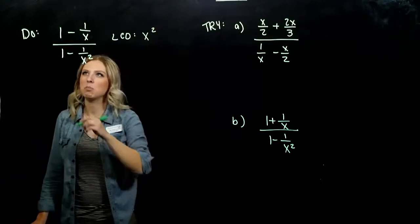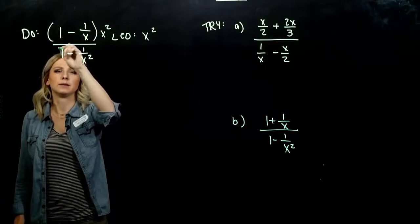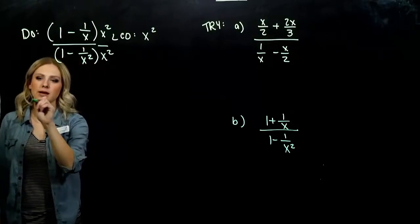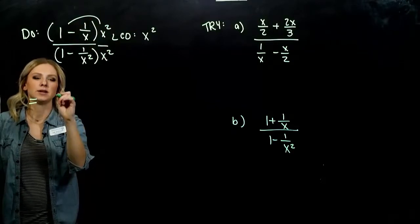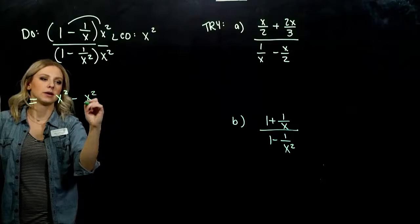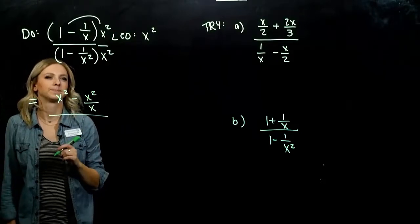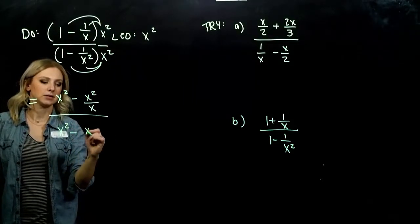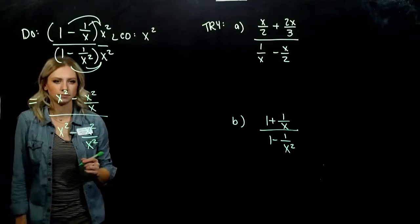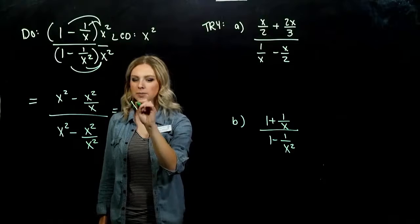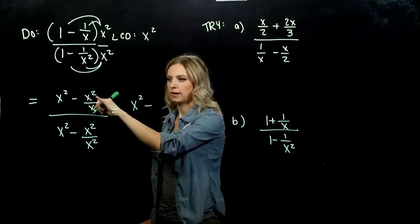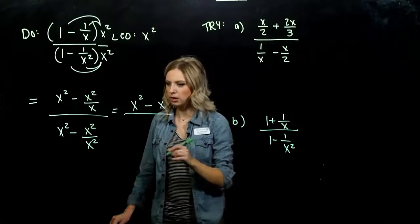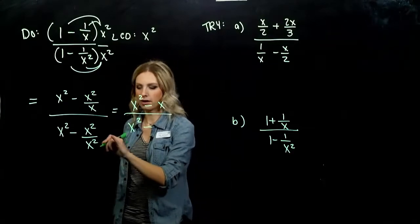We multiply everywhere up top and everywhere down below by x squared — same thing divided by same thing is 1, just changing what it looks like. Distributing to each piece: the first term gives x squared. The next term gives x squared divided by x. Down below: another x squared minus x squared over x squared, which simplifies to x squared minus 1.